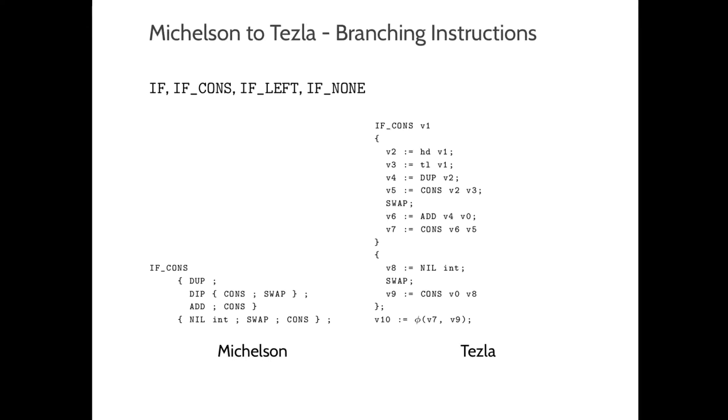To deal with branching, the Tezla representation makes use of phi functions that select between two values depending on the branch. These are used when in both branches exist stack values that are created or modified which are later consumed outside the branches. In the example, the last cons instruction of each branch creates a value that is later consumed outside the branches. That value is then defined through the use of a phi function.